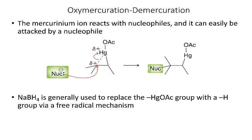This mercurinium ion is still very reactive with nucleophiles, so it can easily be attacked by a nucleophile. When a nucleophile comes in, it disrupts the mercury-carbon bond and results in a product. To get rid of the HgOAc, we can use a variety of different reagents. NaBH4 is a common one — when we react the compound with NaBH4, it replaces the mercuric cation with a hydrogen.